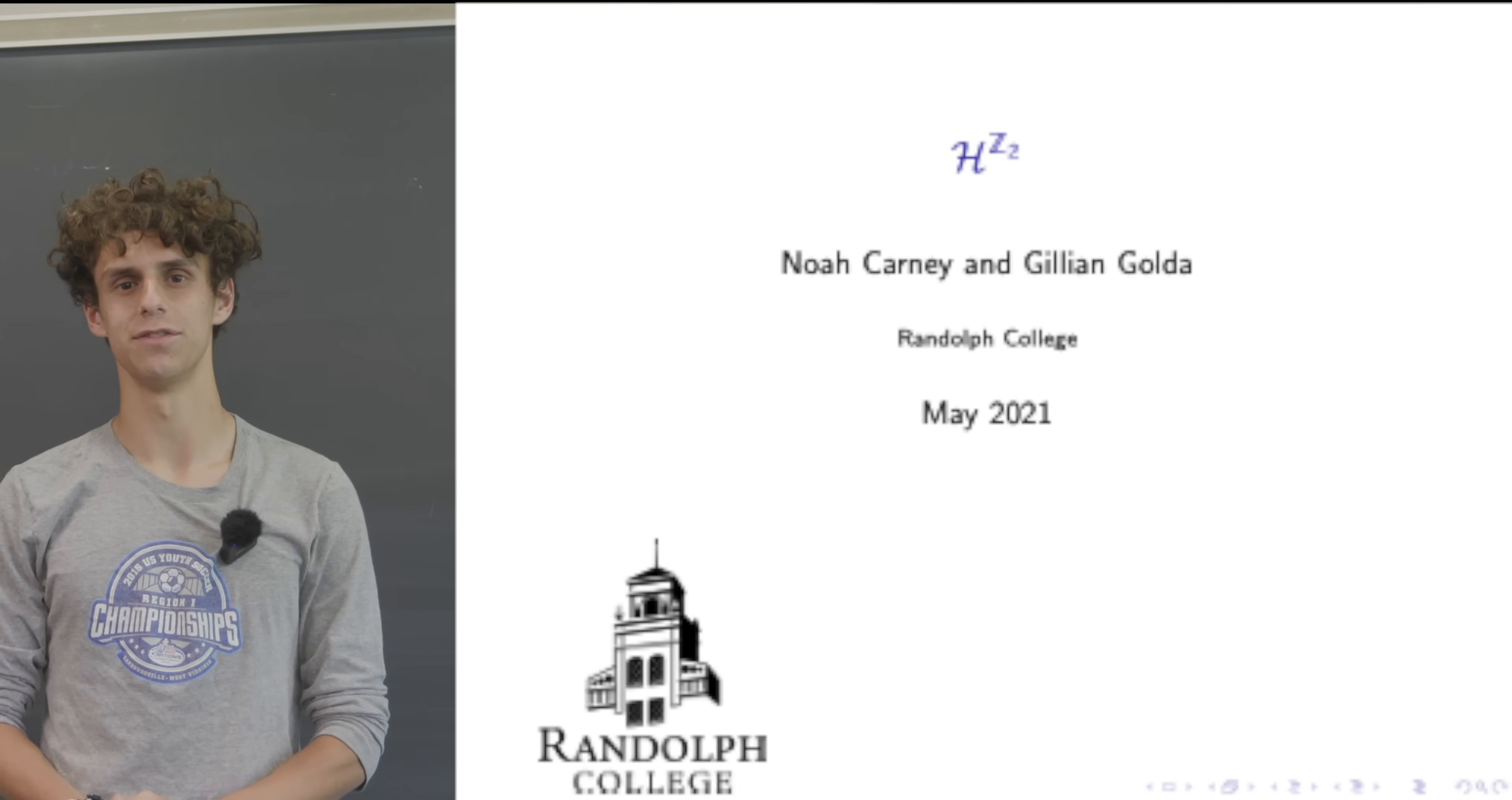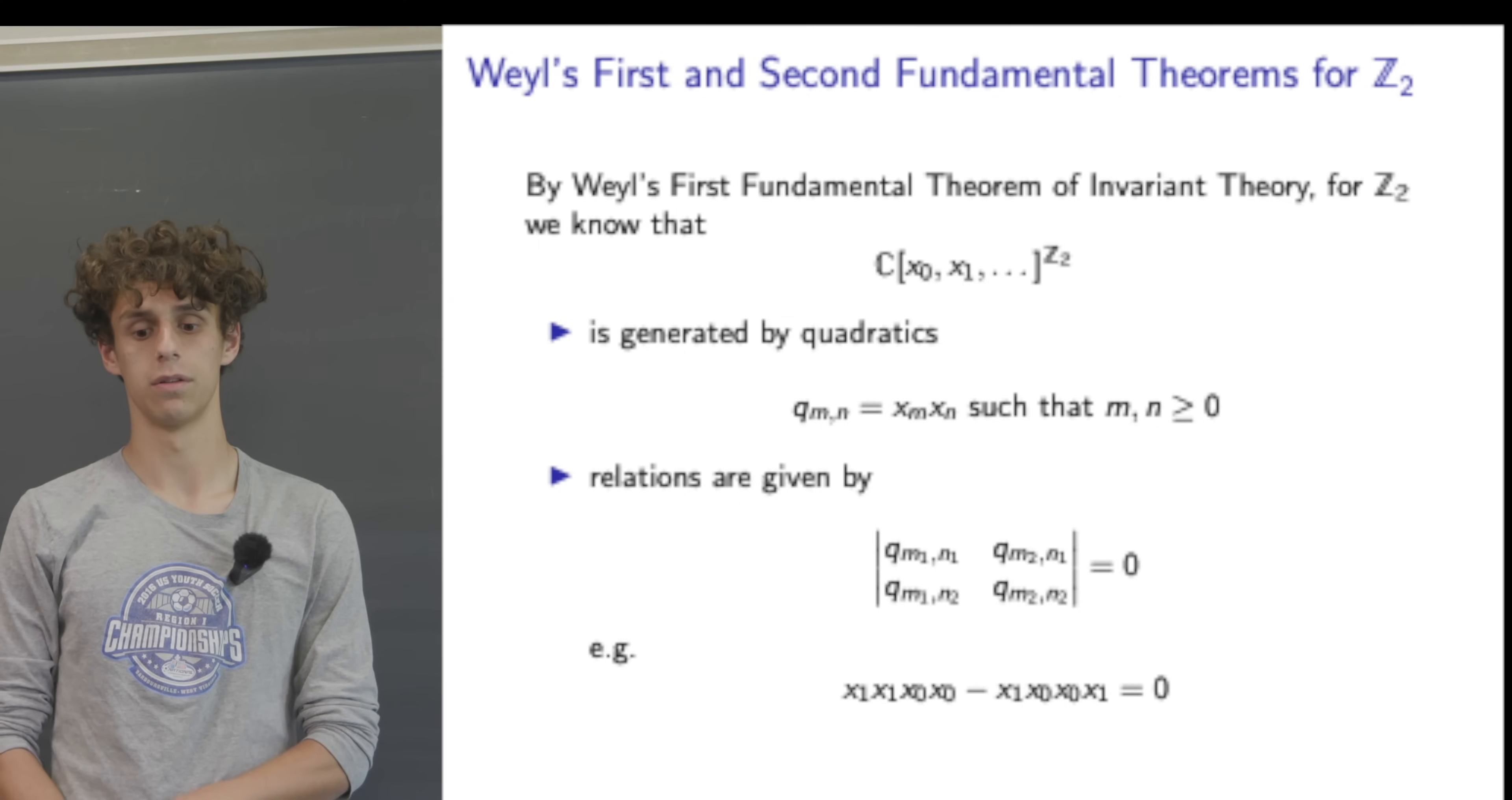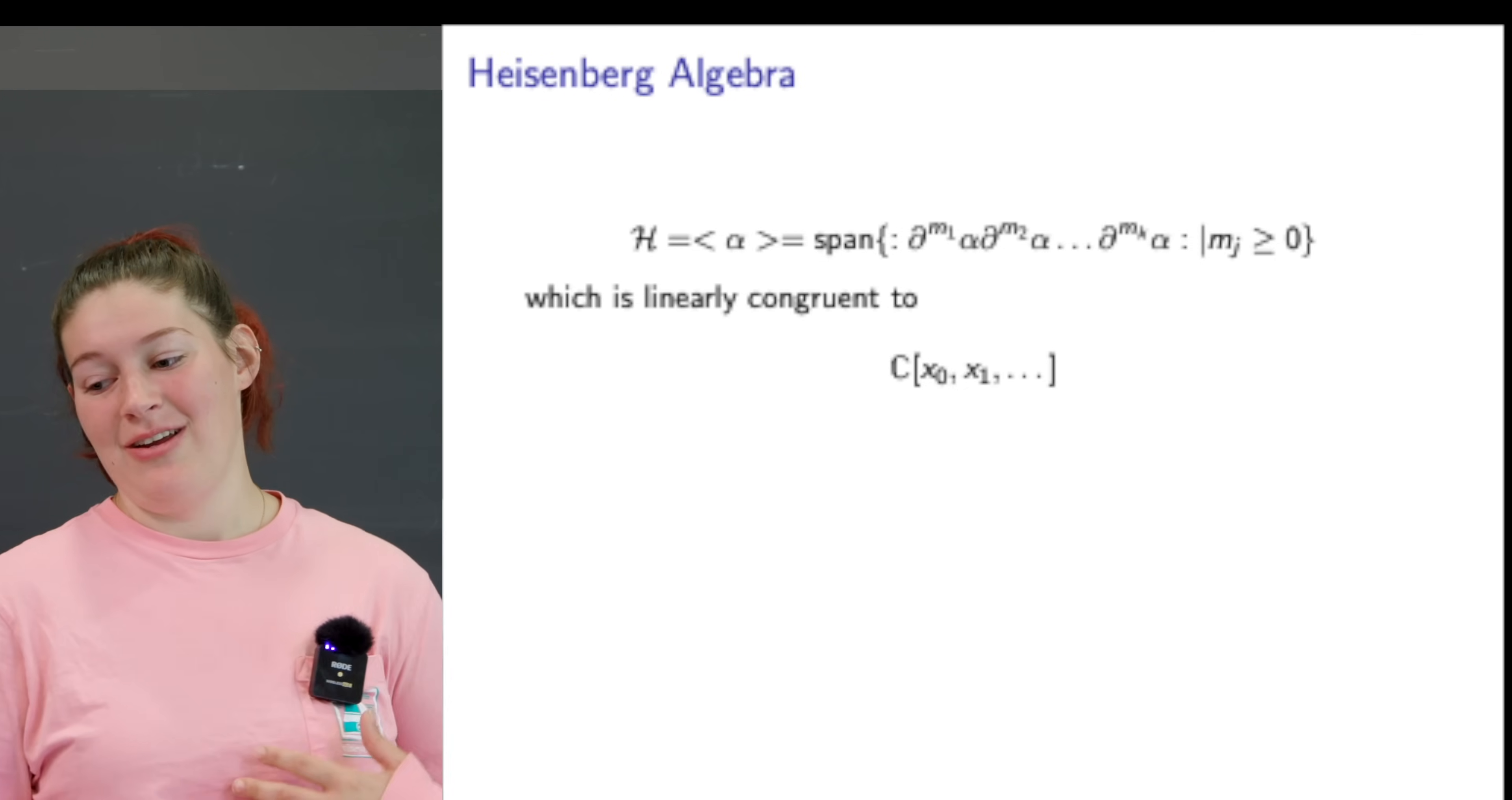This is Jillian's presentation for H with Z2 acting on it. By Weyl's first fundamental theorem of invariant theory for Z2, we know that this polynomial ring is generated by quadratics Q_{M,N} which equals X_M X_N such that M and N are greater than or equal to zero. The relations for this ring are given by the determinant of this matrix equal to zero. The Heisenberg algebra is generated by alpha, also equal to the span of all the derivatives of alpha times each other where m_j is greater than or equal to zero, which is isomorphic to the polynomial ring.